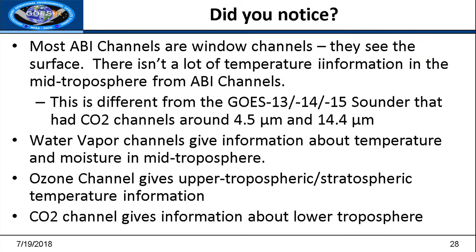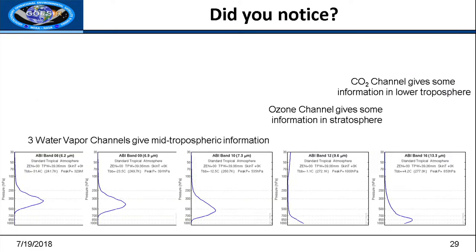Most ABI channels are window channels — they see the surface. This is different from the GOES-13, 14, 15 sounder, which had CO2 channels around 4.5 and 14.4 microns. With ABI, you get a little temperature information from water vapor and a little from CO2 channels, but mid-tropospheric temperature is very difficult — the water vapor channels give mid-tropospheric information, the ozone channel gives lower tropospheric and stratospheric information, and the CO2 channel gives some lower tropospheric information.